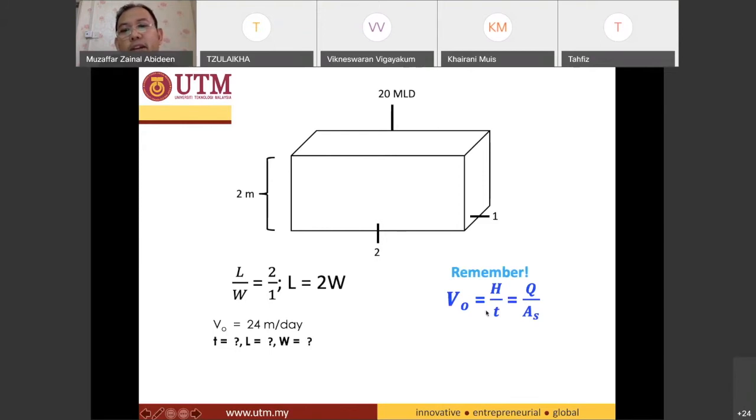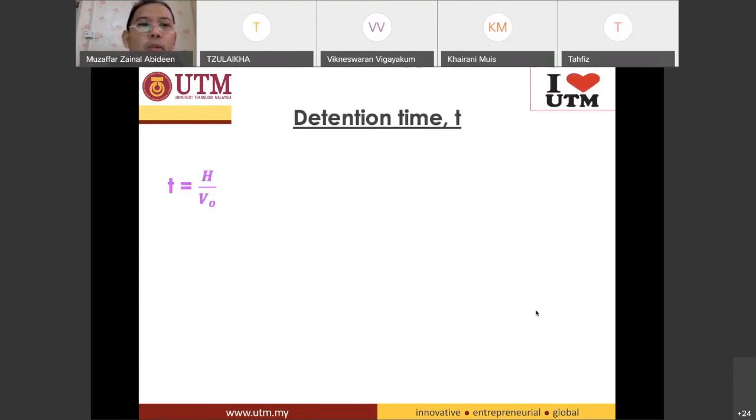Let's remember V0 is equal to H divided by t and Q divided by AS. Right. So with that, t is equal to H divided by V0. Our H was 2 meter divided by this value, 24 meter per day.